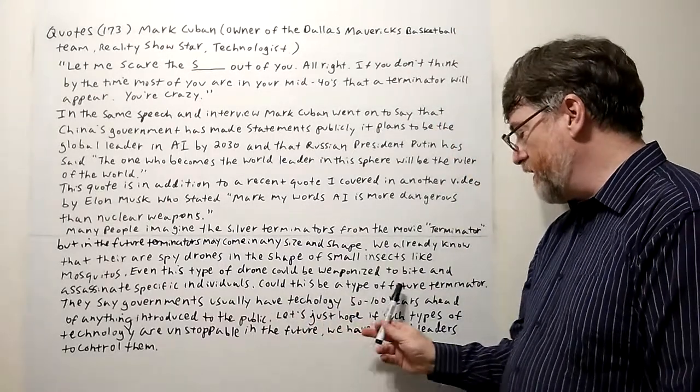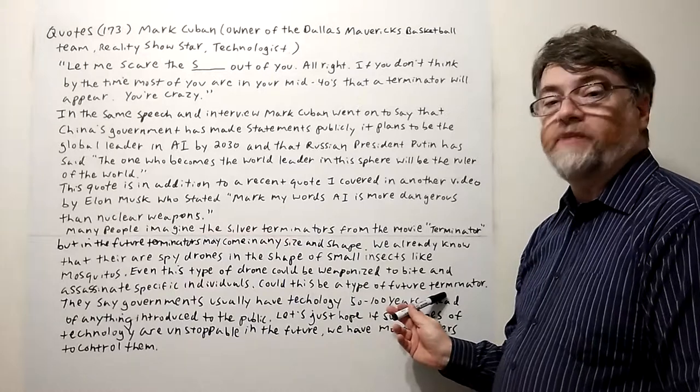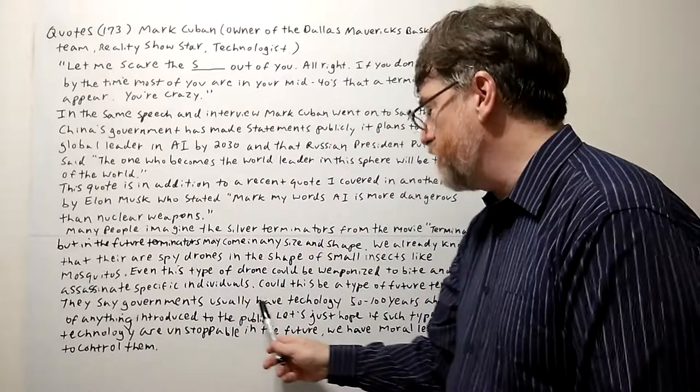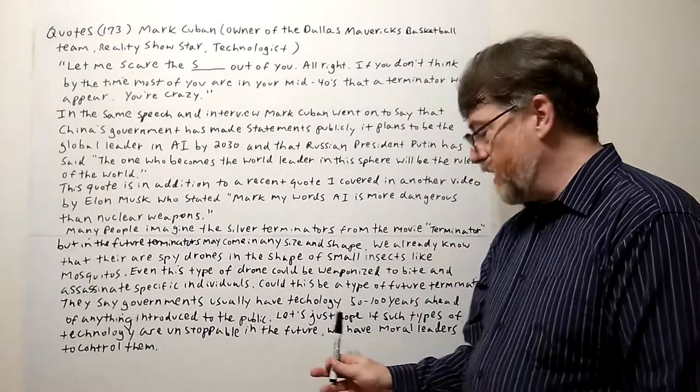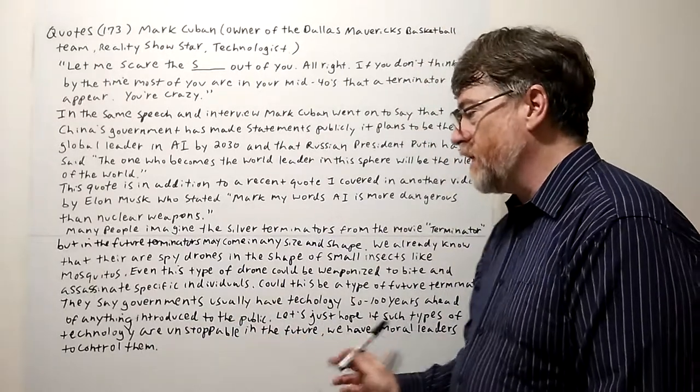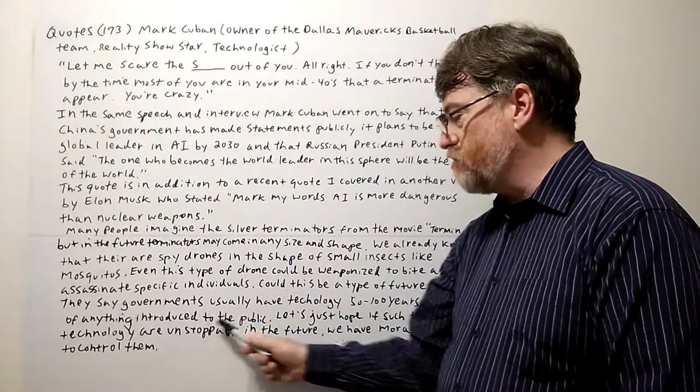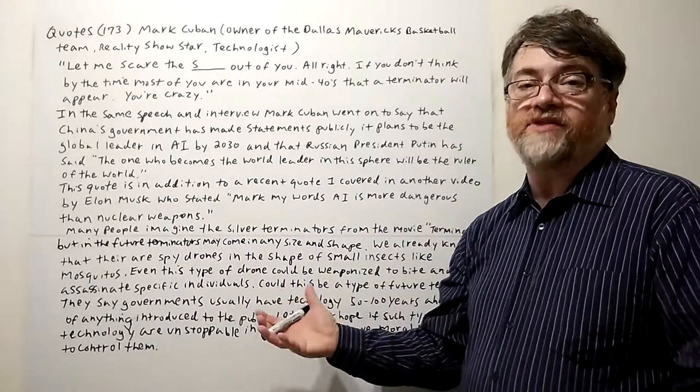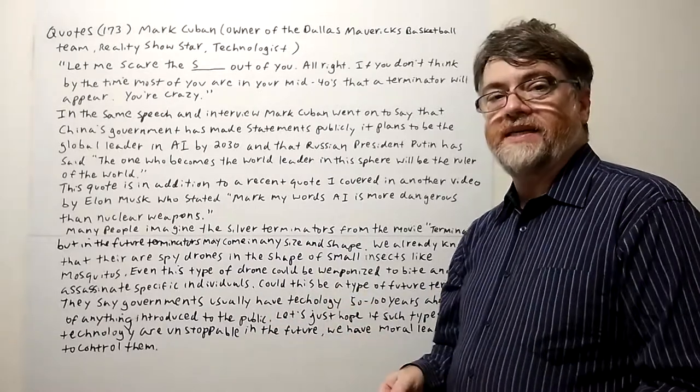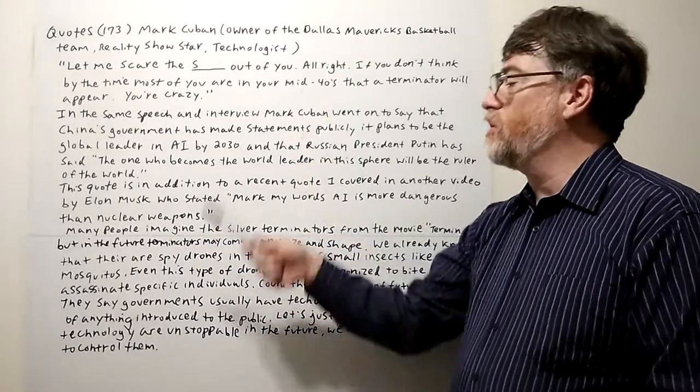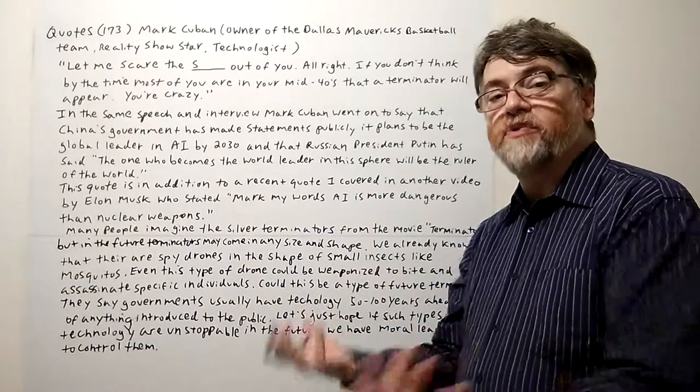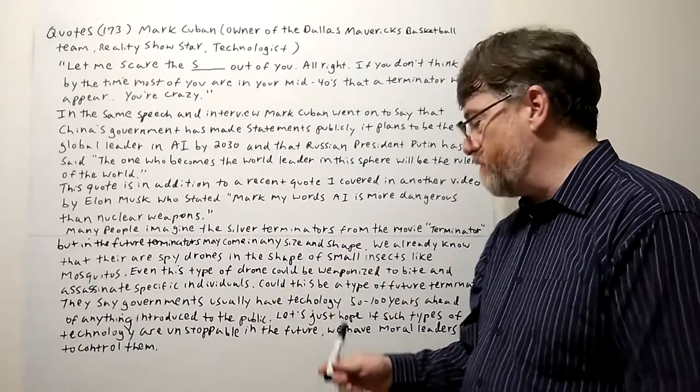Could this be a type of future Terminator? They say governments usually have technology 50 to 100 years ahead of anything introduced to the public. So who knows, they already may have some of those things out there that both of these guys, either Mark Cuban or Elon Musk, has already got to see or may be privy to. Maybe they got this information already.